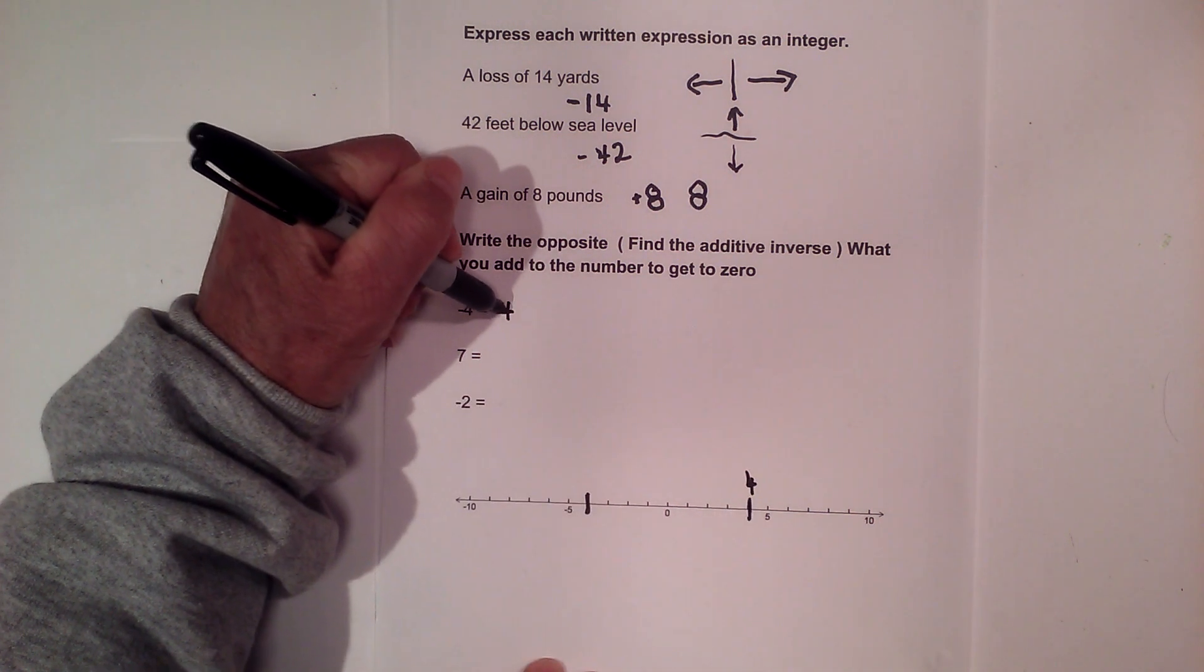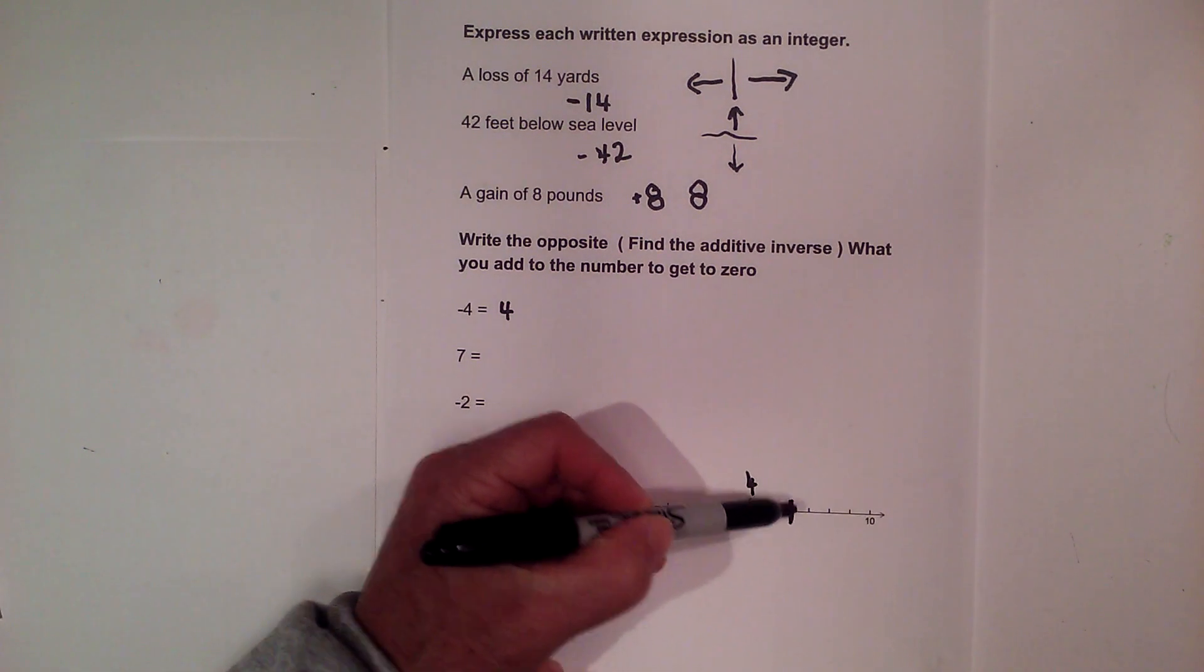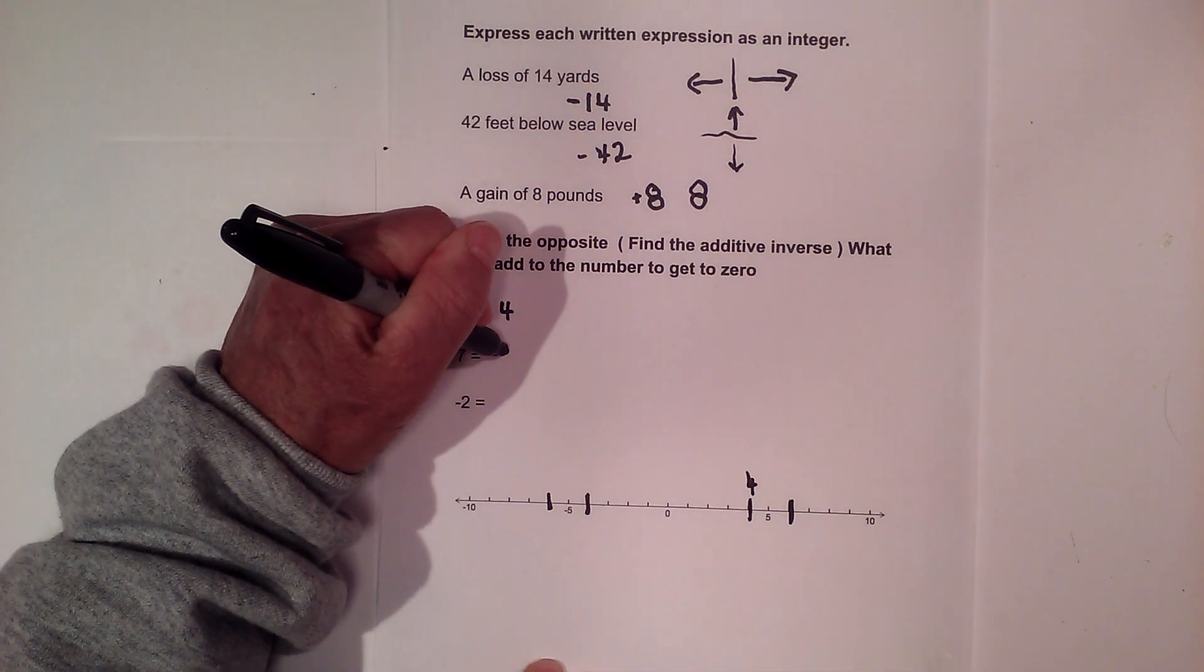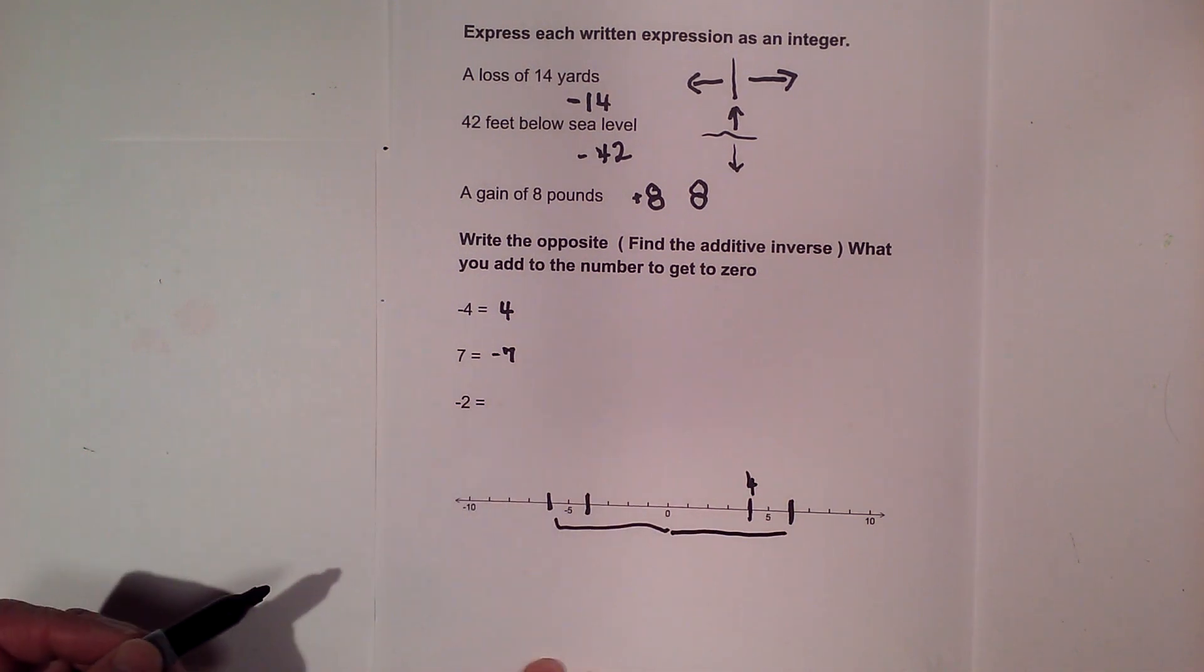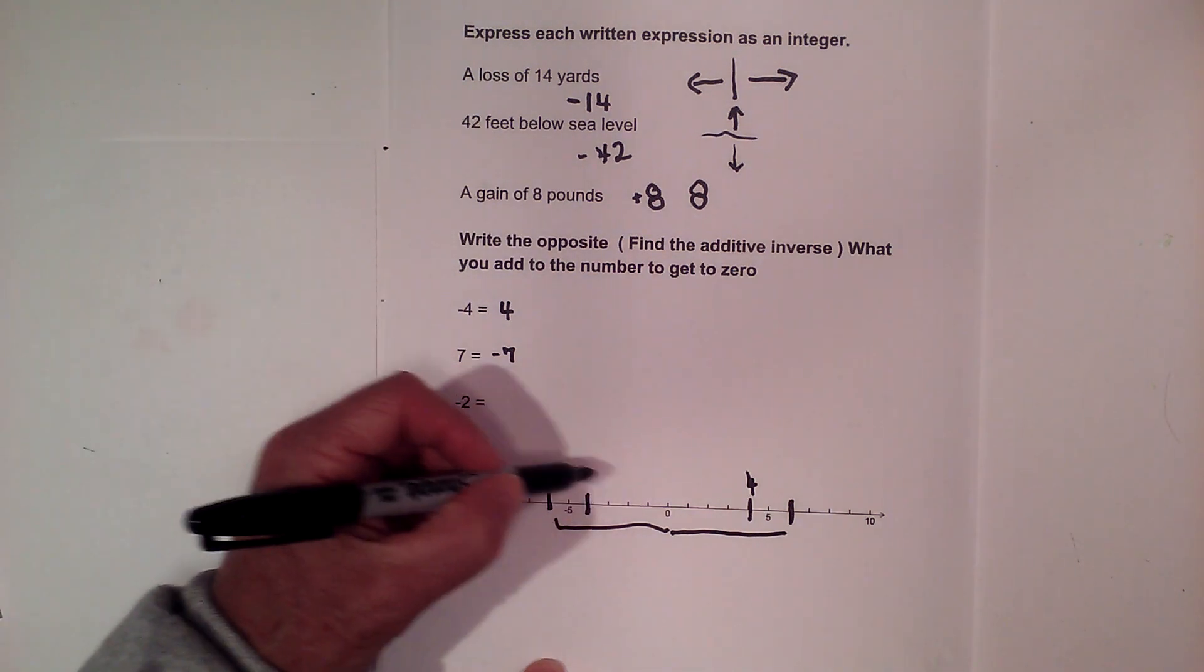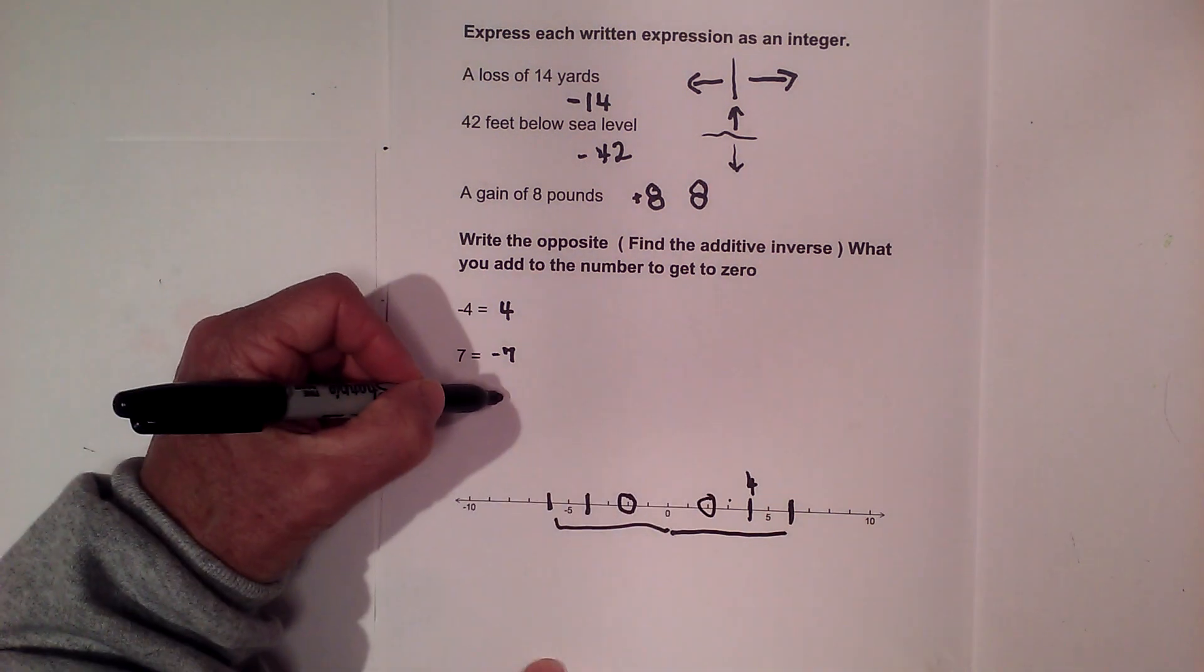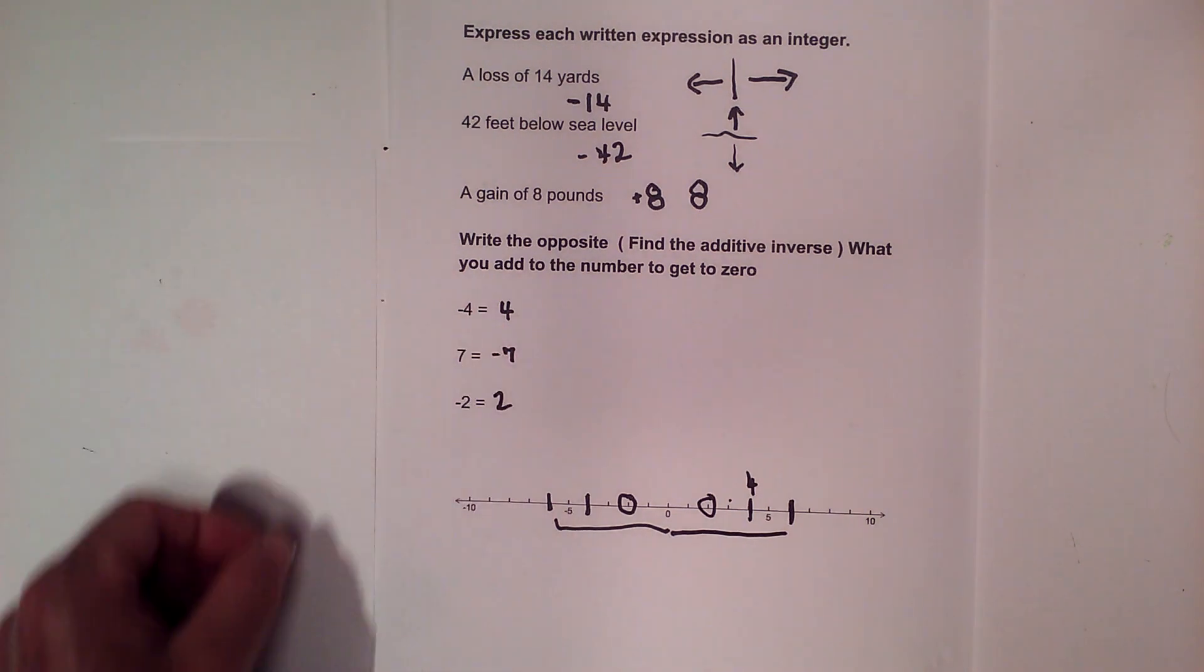So negative 4, the opposite is positive 4. Now we have 7. 7 is here, it's 7 units away. On the negative side, what's 7 units away? That is negative 7. Notice that they are both the same equal distance away from zero. That's what an opposite is, the additive inverse. And negative 2 is 1, 2, I'll circle it. And so positive 2, 1, 2 would be the same distance, so that would be 2. Opposite, same distance from zero.